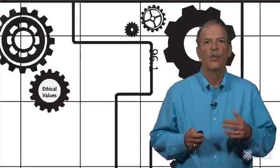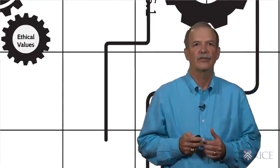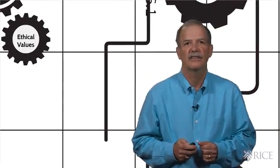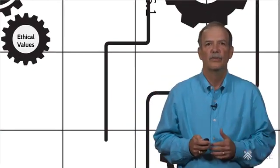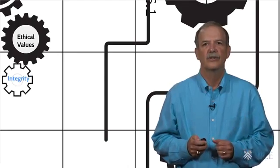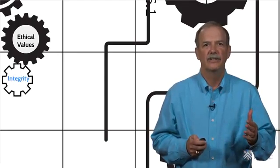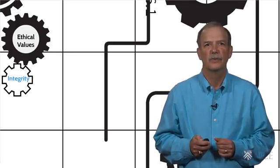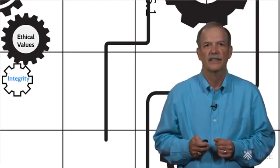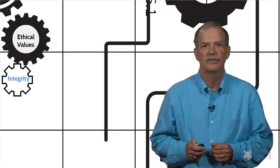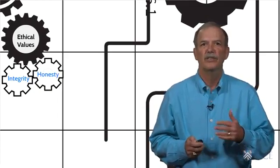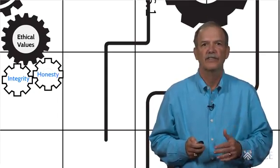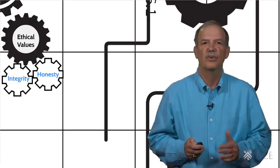So what ethical values or personal values should we have? Different organizations have different views, but at least one includes integrity, which means exercising good judgment in professional practice, adherence to ethical principles, honesty. We've talked about honesty before. It means truthfulness, fairness, sincerity. These are all important.